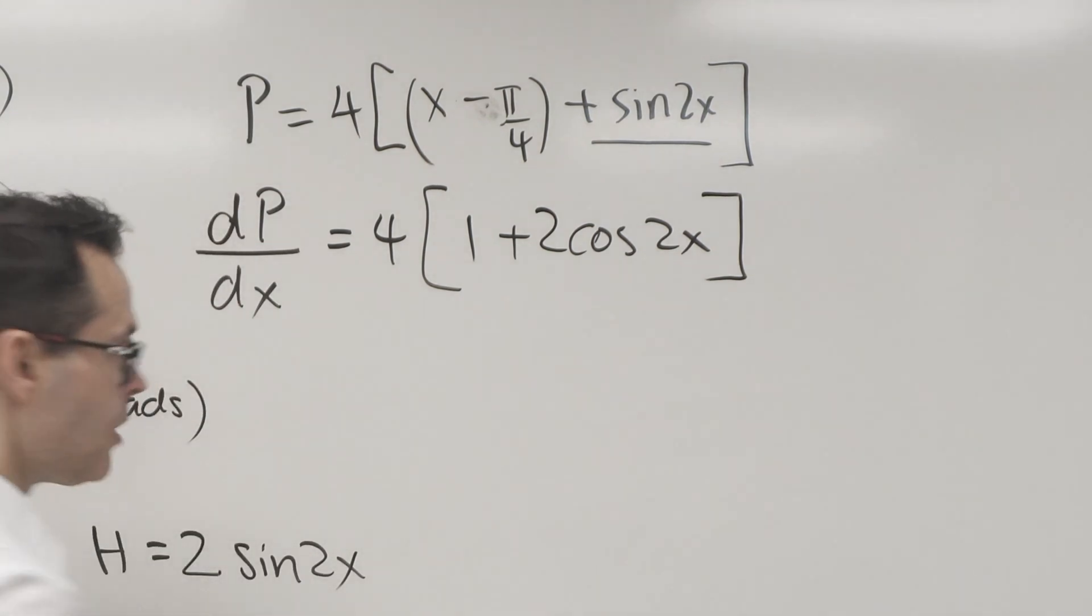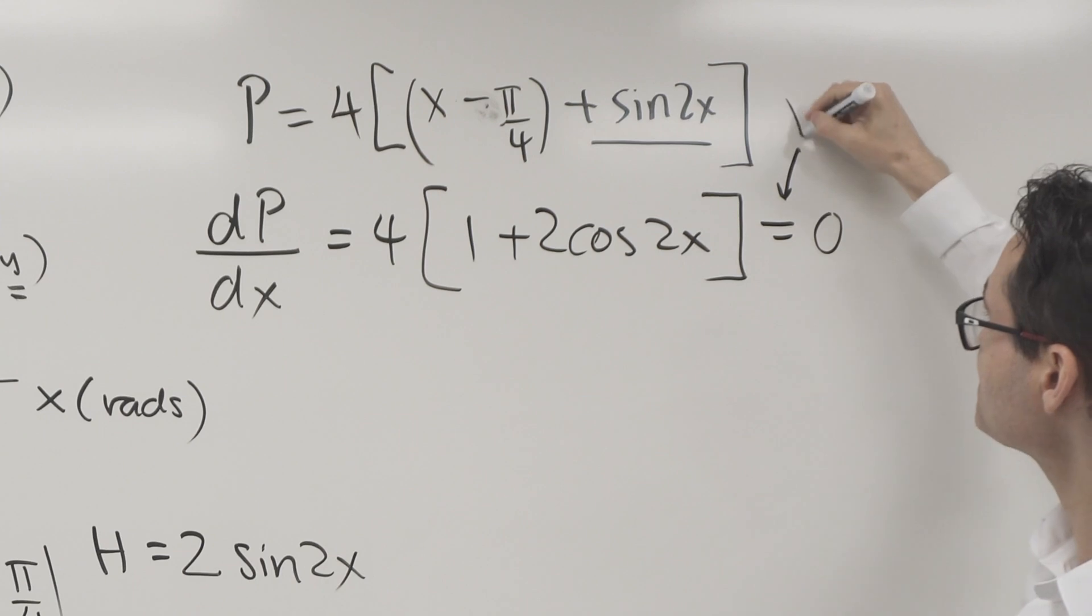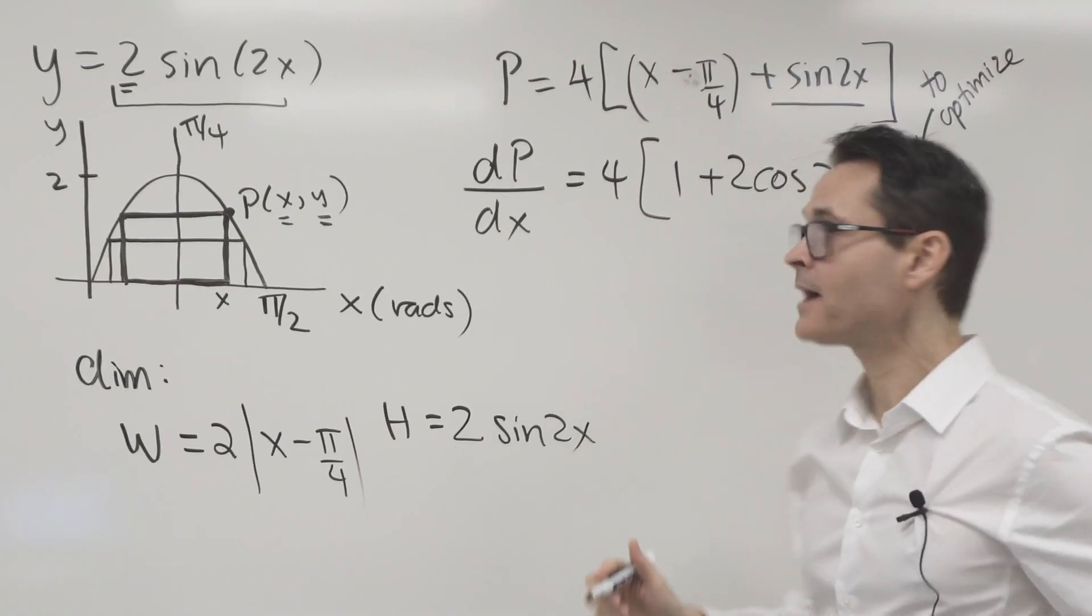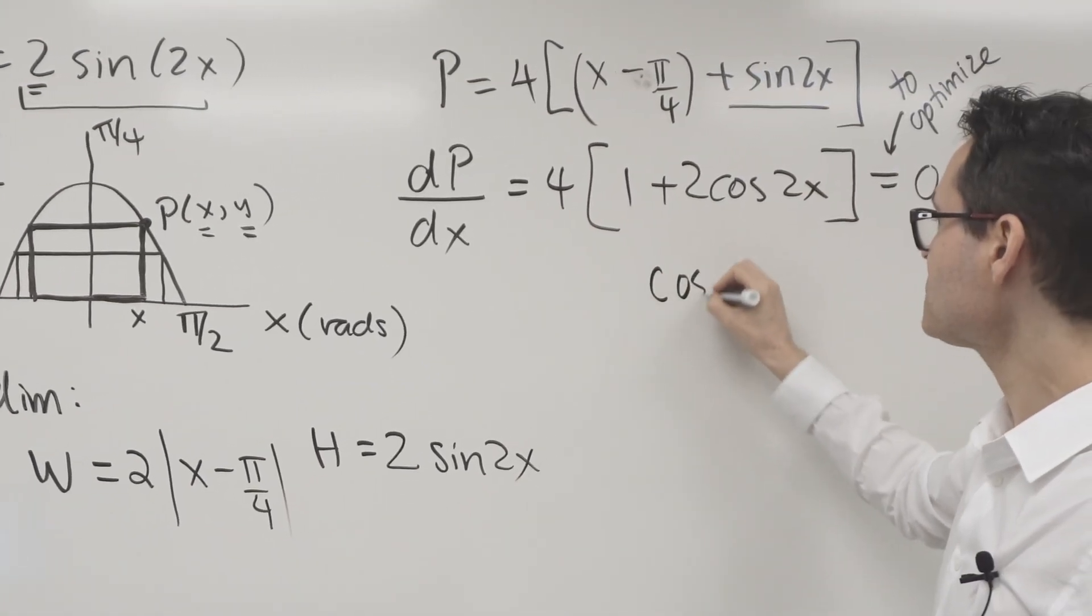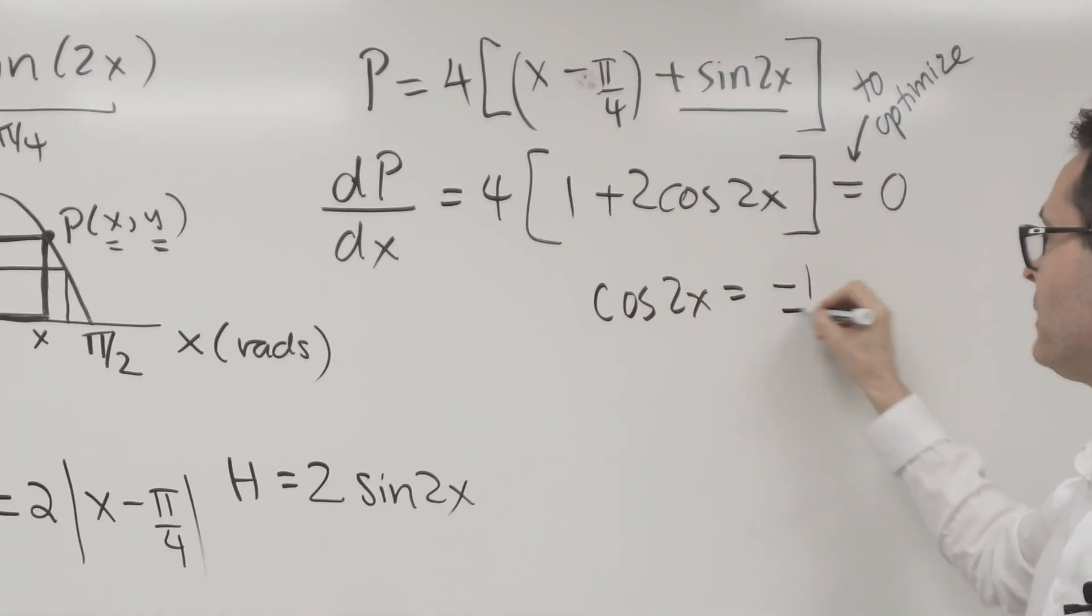To optimize or maximize, I set that equal to zero. So setting it equal to zero to optimize, and then I can solve for x. Here the four doesn't matter, that's going to isolate cosine two x equals negative one-half.